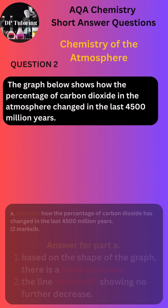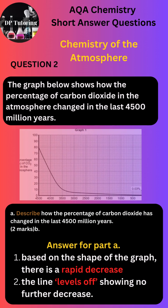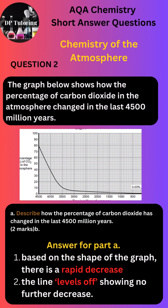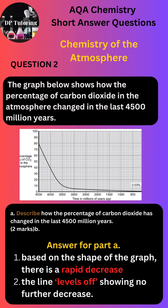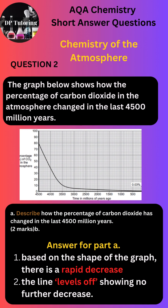Answer for part A. You need to provide two points. One: based on the shape of the graph, there is a rapid decrease. Two: the line levels off, showing no further decrease.